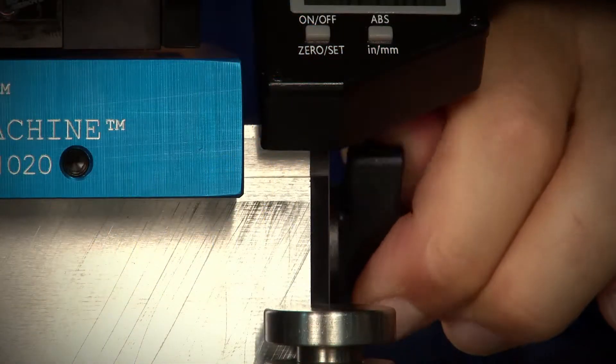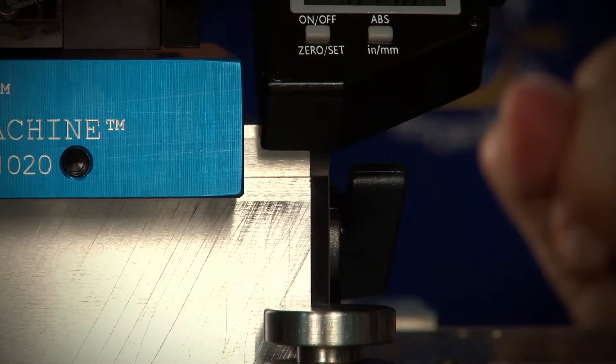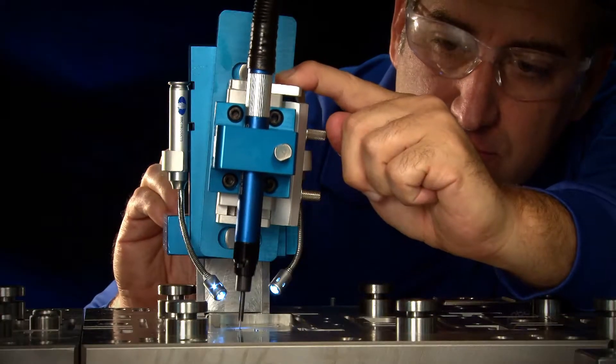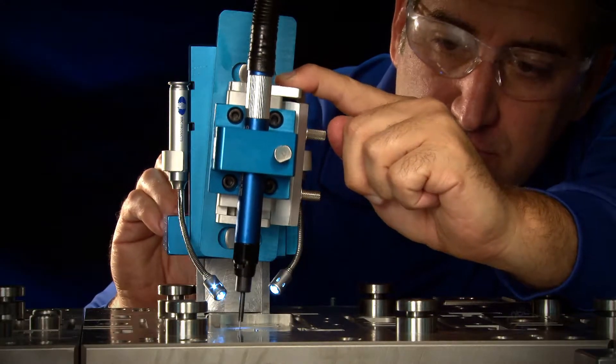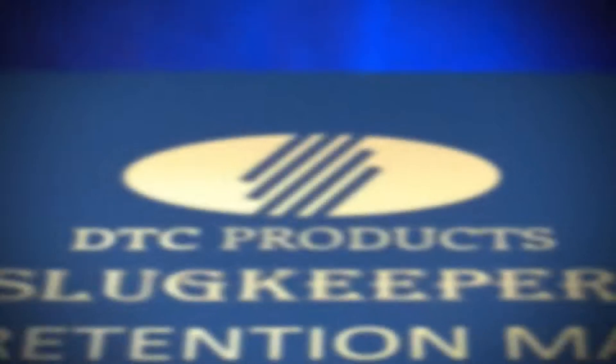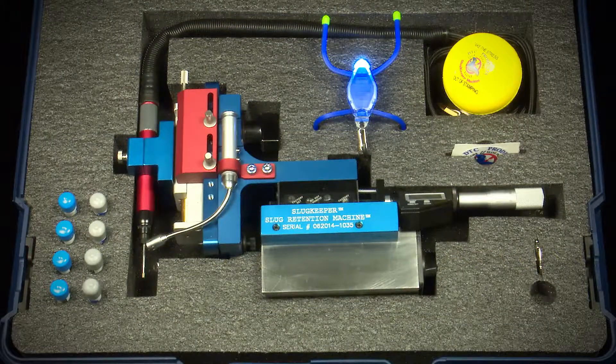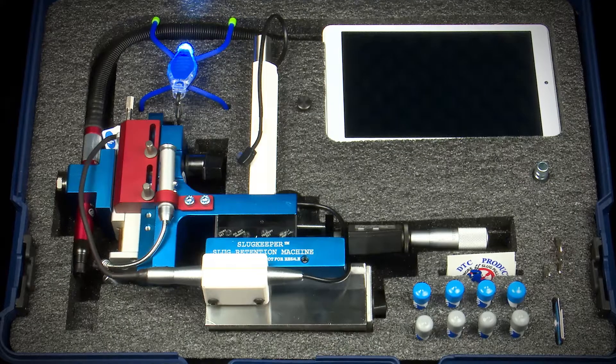A magnetic base allows it to be mounted temporarily, but firmly in place on the die surface during the grooving operation. When it's not in use, the slug keeper can be kept handy in its sturdy carrying case ready for the next task.